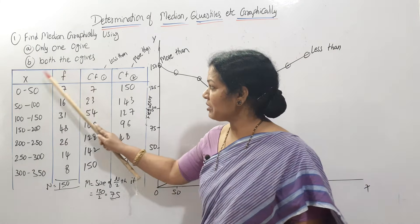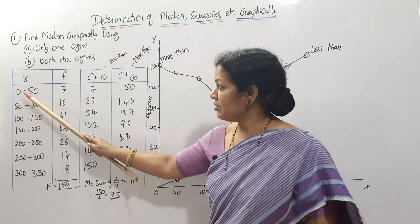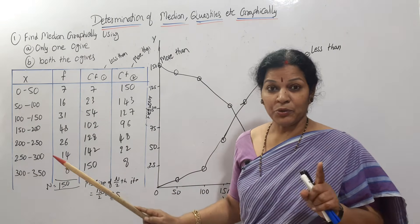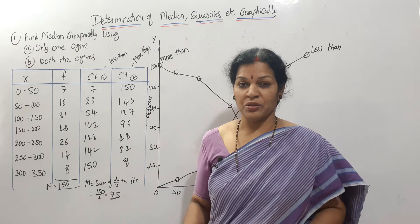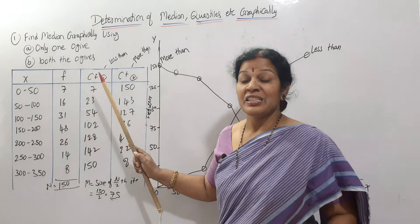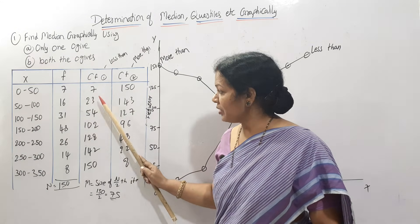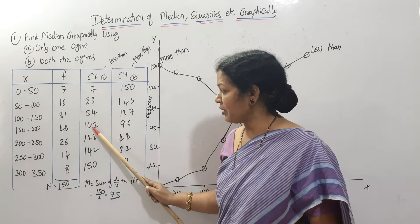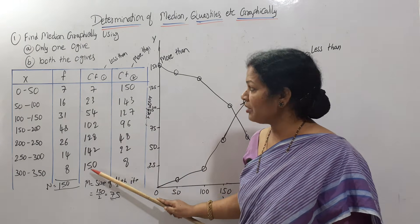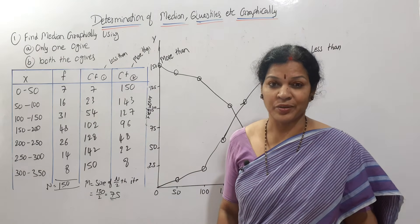The problem gives us x and frequency values. X ranges from 0–50, 50–100, and so on up to 300–350, with corresponding frequencies. We need to find less than and more than ogive curves. For the less than cumulative frequency (CF1): 7 as is, 7+16=23, 23+31=54, 54+48=102 — we calculate all CF1 values this way. These are the less than cumulative frequencies.